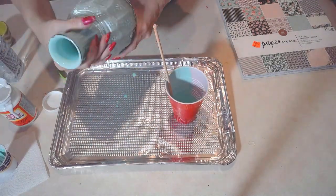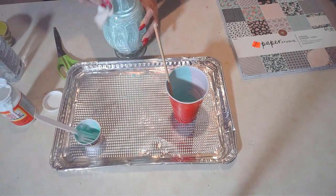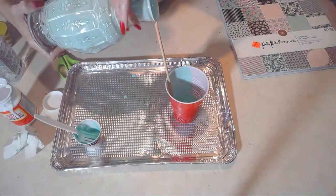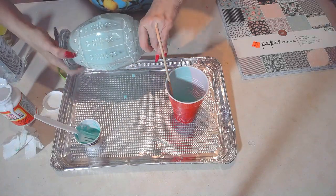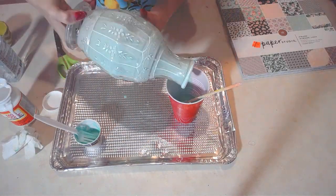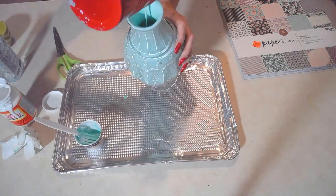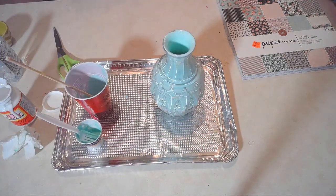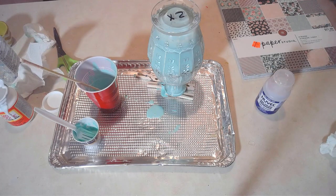Once I am sure that I've completely covered the inside of this vase, I'm going to make sure that I turn it over and release all of the extra paint that's in there. And then I'm going to stand it up on some clothespins so it doesn't create a puddle at the opening of the vase.